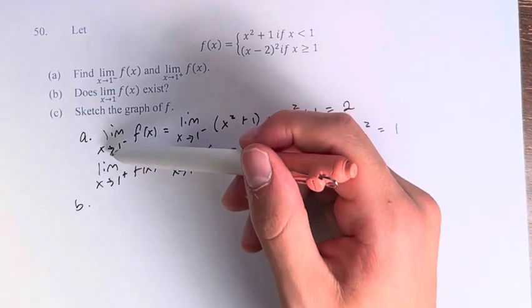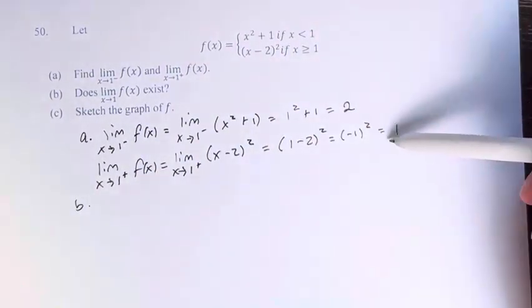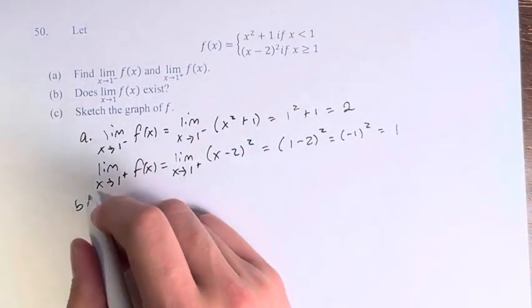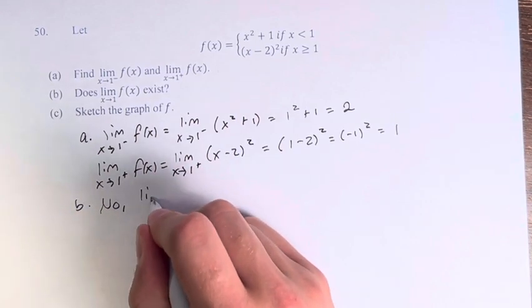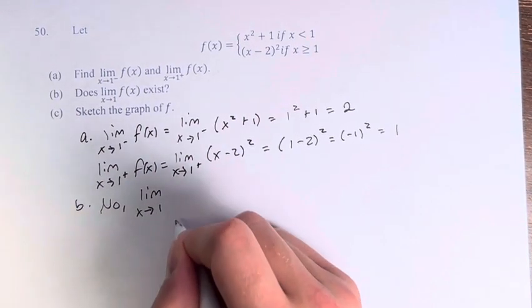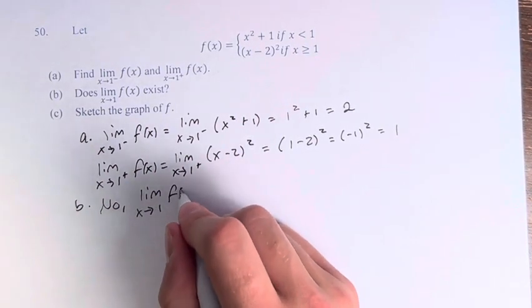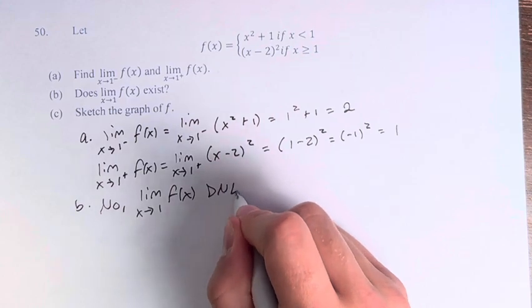And since the limit as x approaches 1 from the left and from the right do not match, they're not the same value, the limit of x approaching 1 of f of x does not exist.